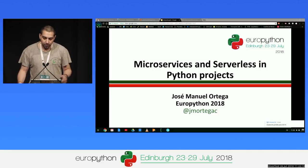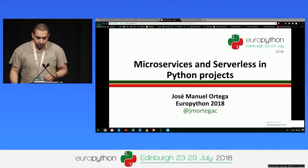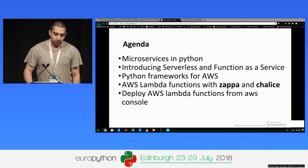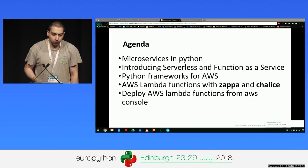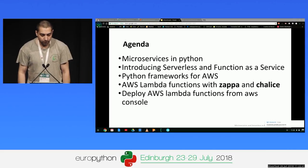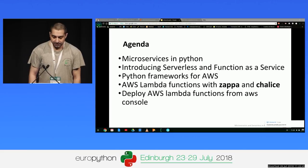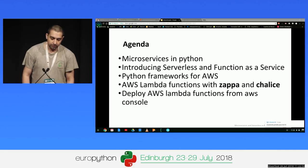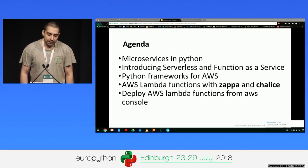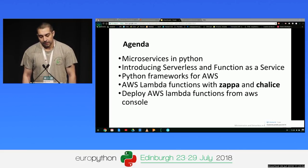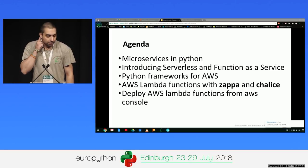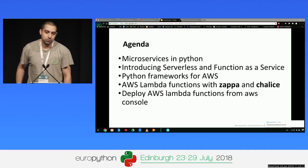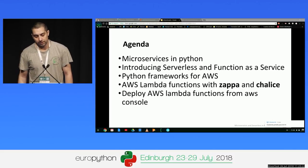Basically, we start with a couple of definitions — what are microservice and serverless — and some examples. First, I will talk about microservice in Python: what are the frameworks and the tools that we have in Python for building applications following this type of architecture. Later, I will introduce serverless and functions as a service. Then I will comment on the main Python frameworks for working with Amazon Web Services, and I will focus on two tools: Zappa and Chalice. Finally, I will show some demos for deploying AWS Lambda functions from the Amazon console.